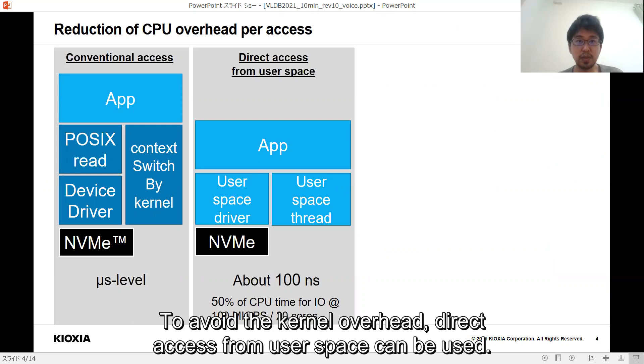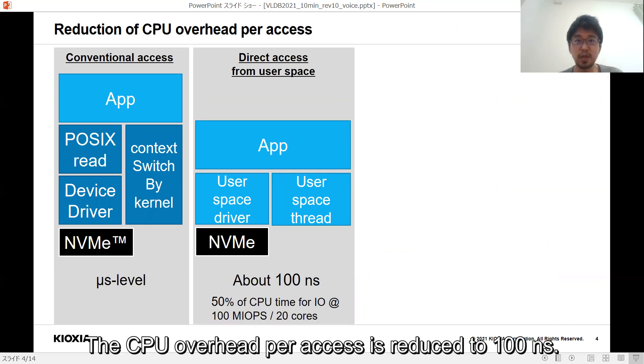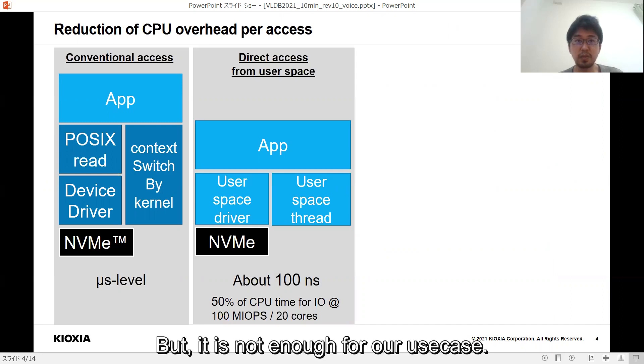To avoid the kernel overhead, direct access from user space can be used. The CPU overhead per access is reduced to 100 nanoseconds, but it is not enough for our use case.